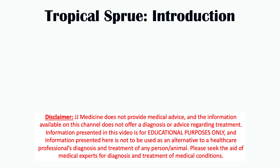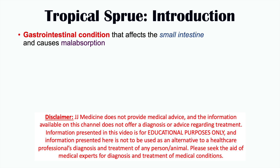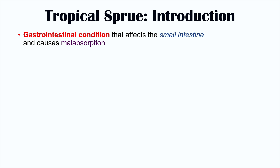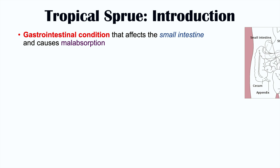Hi, everyone. This lesson is on tropical sprue. Tropical sprue is a gastrointestinal condition that affects the small intestine and causes malabsorption. We're going to get into more specific detail as to what happens and what types of nutrients are poorly absorbed later on in this lesson.